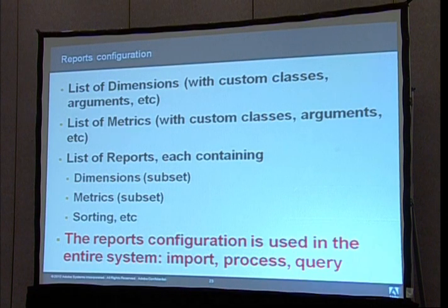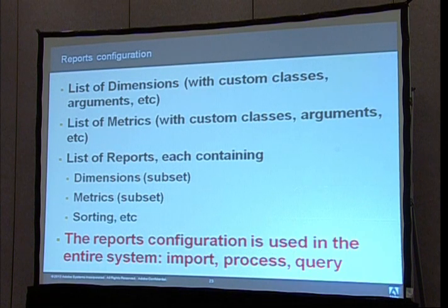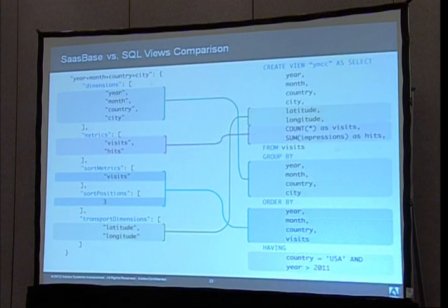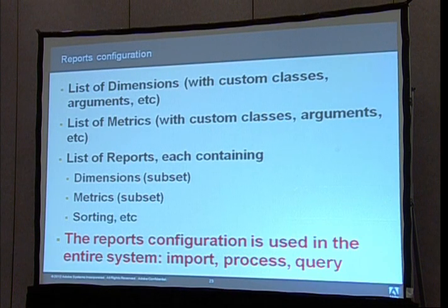The report's configuration is the central part of our system. It's used by all components — the import step, the process step, the query step — all load the set of reports configuration and use it to make sense of the input data. The report's configuration contains a list of dimensions, a list of metrics, and a list of reports, which have this format: a subset of dimensions, a subset of metrics, and eventual sorting. Apart from this, users can implement and override their own dimension and metrics classes, which turns out to be a really handy mechanism for injecting flexibility into the system.